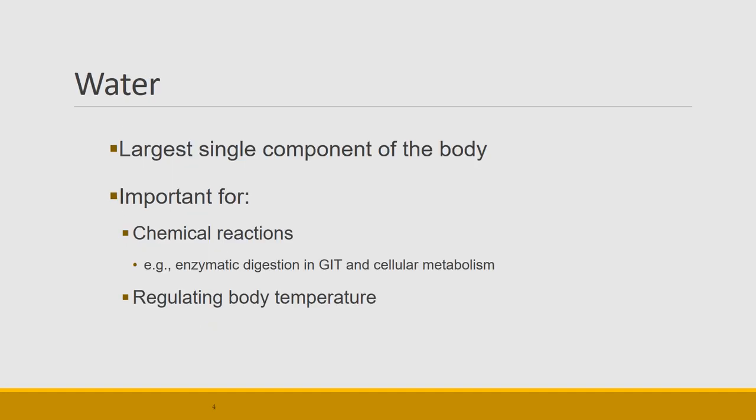We're going to start with water because that's the largest component of our body. The bodies of mammals contain 50 to 70 percent water — more in young animals and less in older ones. We use water in chemical reactions such as enzymatic digestion in the gastrointestinal tract (GIT) and cellular metabolism. Nearly any chemical reaction in our body is going to require water.